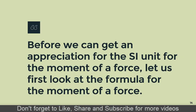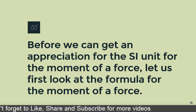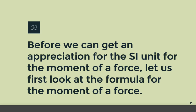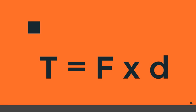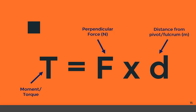Let's look at the SI unit for the moment of a force. First we need to look at the formula. We can write the moment of a force as T equals F times D, where T is our moment or torque, F is the perpendicular force acting on the body, and D is the distance from the fulcrum where the force acts.